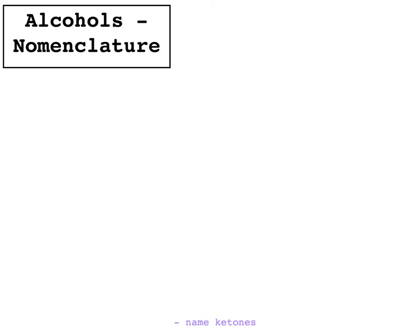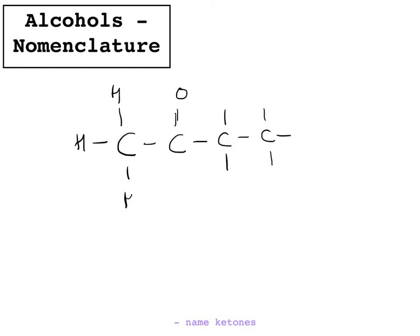Now we're going to name ketones. With ketones, that's where you have a C double bond O that has got carbon groups on either side. For this first one, you can see it's a straight chain ketone — nothing coming off the chain other than the ketone group. In this case you do have to say where the double bond O is. It's on the second carbon along, and there are 4 carbons in the chain, so we've got butan-. If it's a ketone, you have 'one' on the end. So it would be butanone, but since it's on the second carbon, it's butan-2-one.